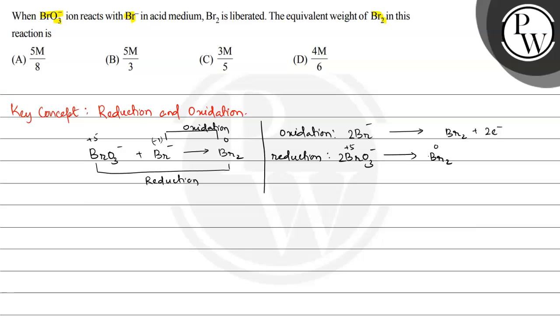Here are 2 Br atoms present, so 2 multiplied by 5 equals 10 electrons total. There are 3 oxide ions present in each BrO3-.